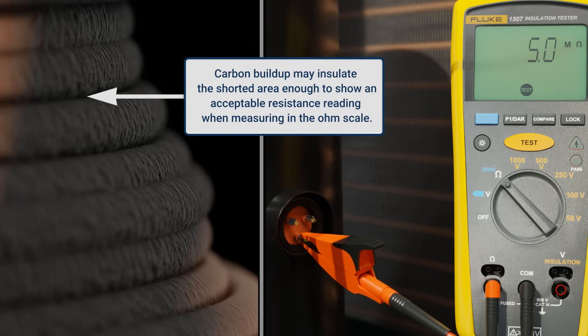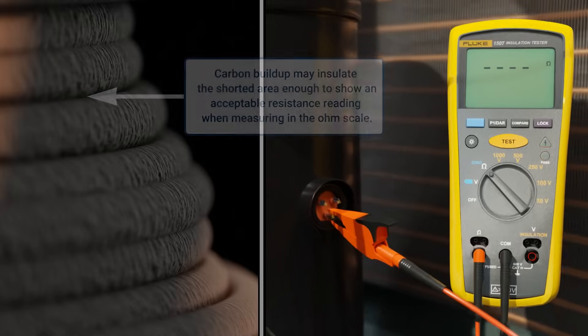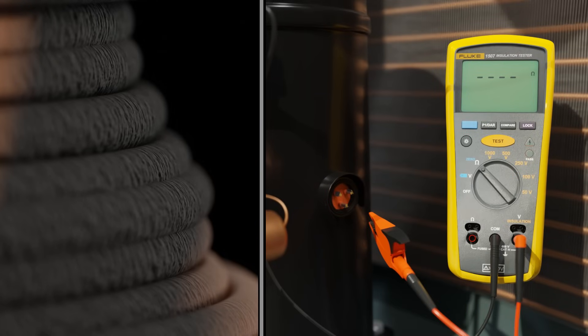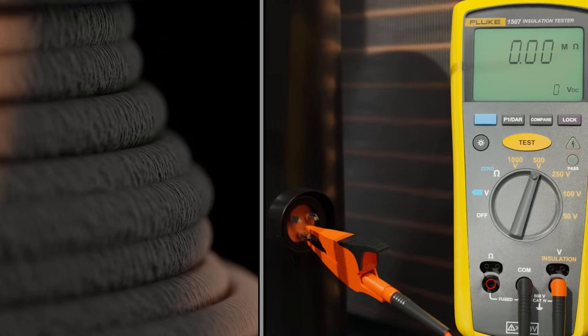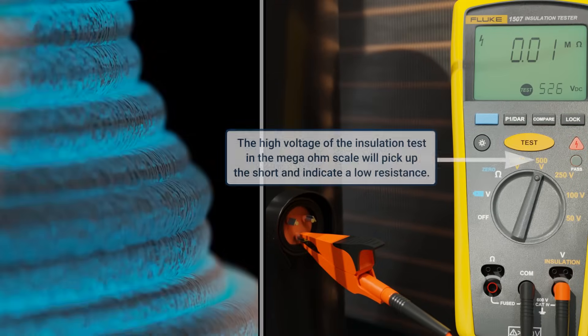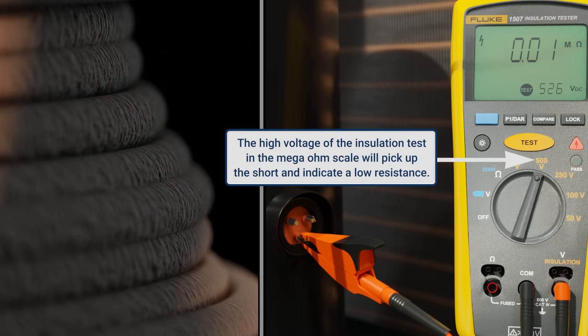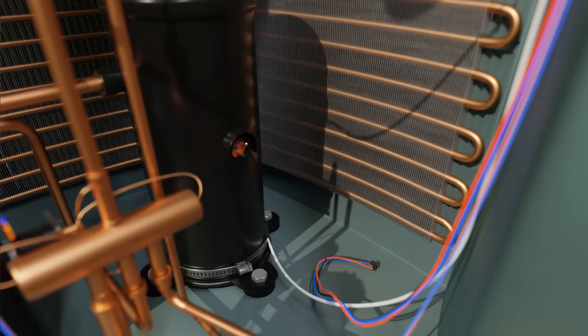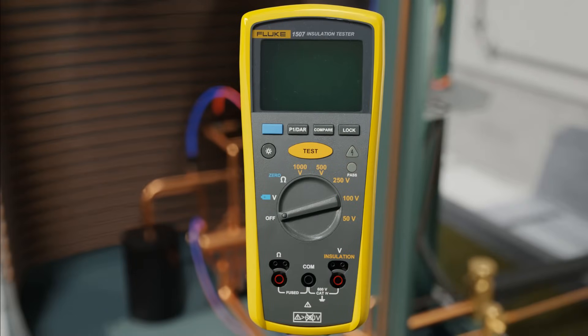You may read a high ohm resistance to ground and still have a shorted or grounded compressor, because that shorted or grounded condition shows up once high voltage is applied. Keep in mind that the quality of the reading will depend on the quality of the meter used and the resting state of the motor.